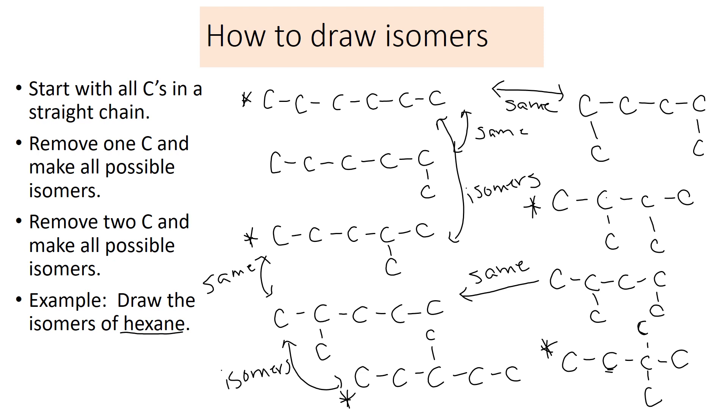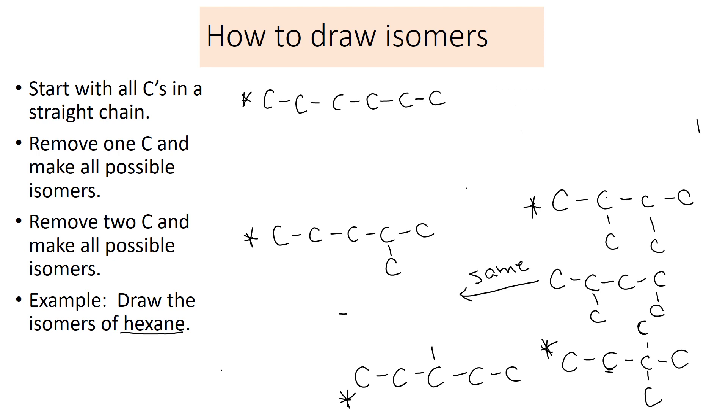I'm going to erase the ones that are the same so that we have left just the actual isomers of hexane. These five are the isomers of hexane.